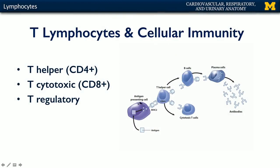An antigen-presenting cell, such as a dendritic cell or a macrophage, is going to phagocytose a pathogen, break it down into its constituent parts, and then put pieces of it on surface membrane receptors — major histocompatibility complex proteins. These proteins are then going to present that antigen to other specialized receptors on helper T cells.